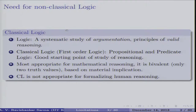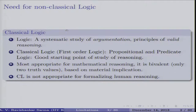Classical logic, that is first-order logic — propositional and predicate logic — is considered a good starting point for the study of reason. It is most appropriate for mathematical reasoning. An important property of classical logic is that it is bivalent: a sentence can be either simply true or false. It has only two values and is based on material implication. Material implication 'A implies B' is defined as 'not A or B,' introduced by Bertrand Russell.